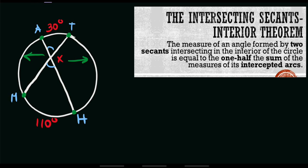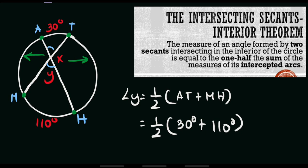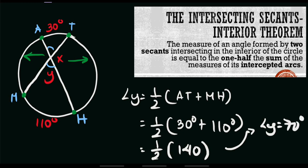Angle y equals one half of the sum of its intercepted arcs: arc 80 which is 30 degrees, plus arc MH which is 110 degrees. Simplifying: one half of 30 plus 110 equals one half of 140, which gives angle y equals 70 degrees. That is our first value.